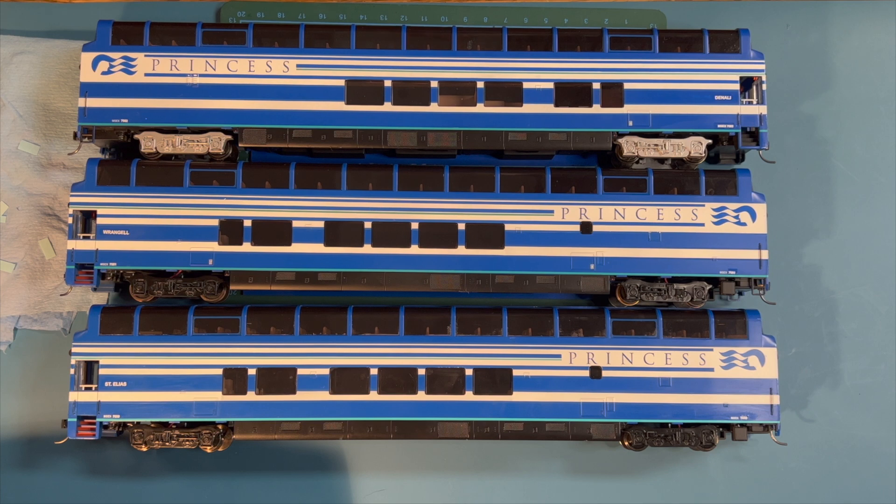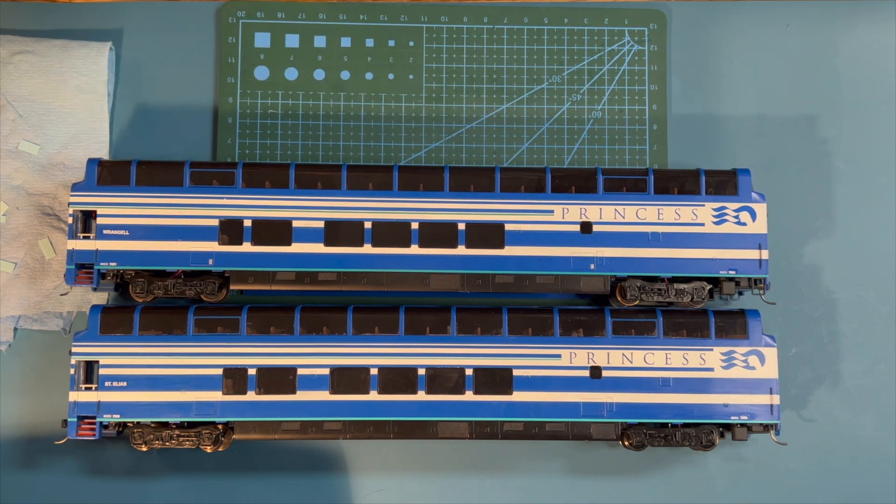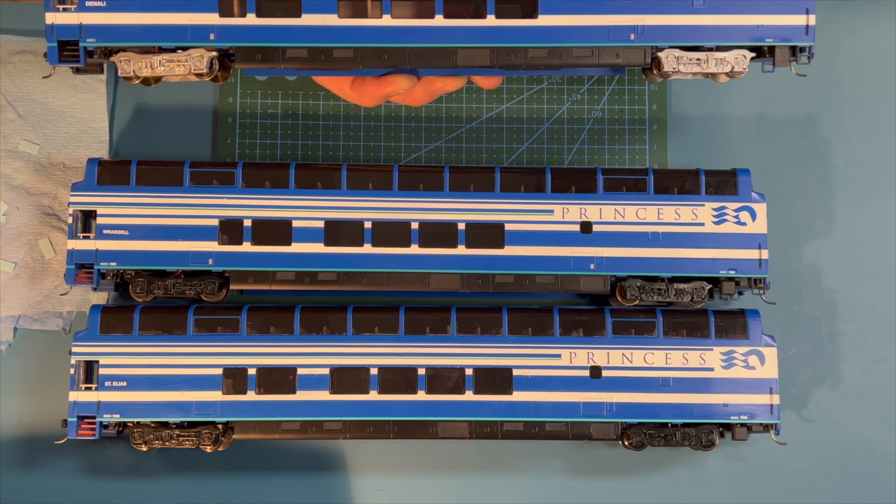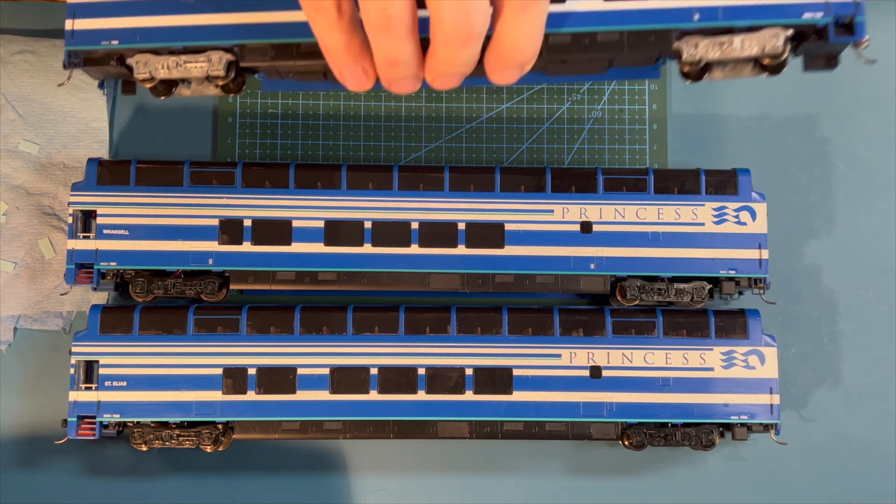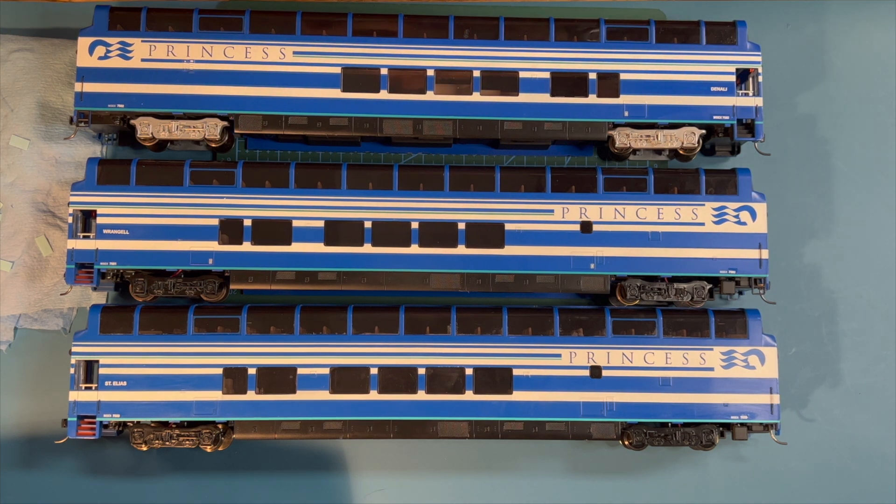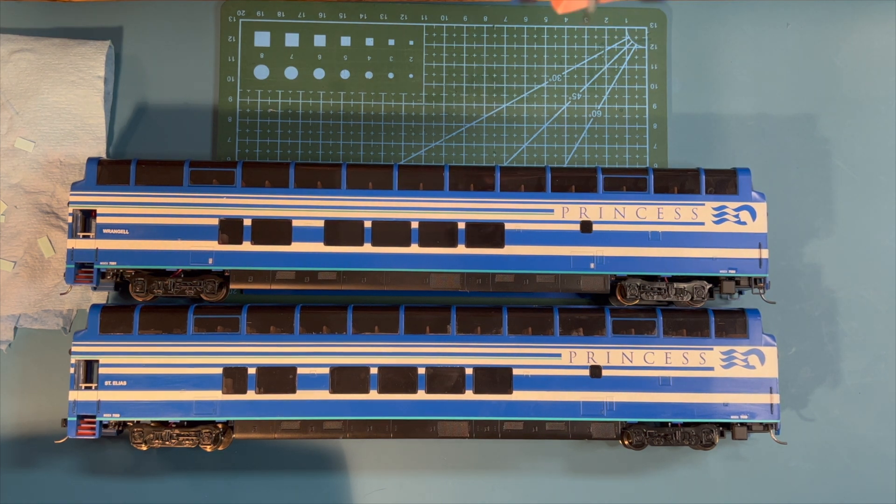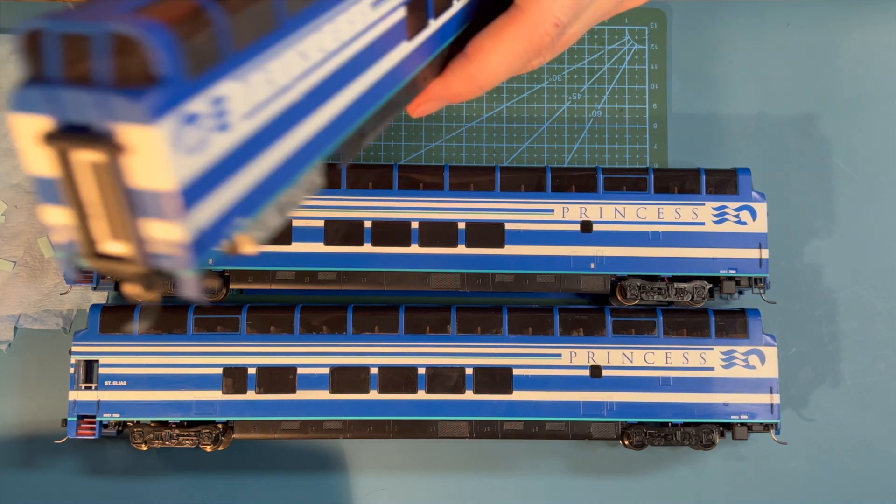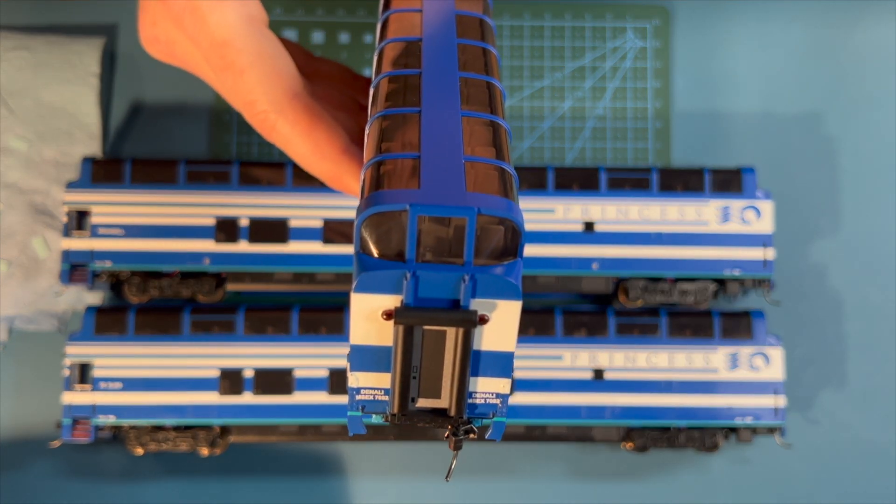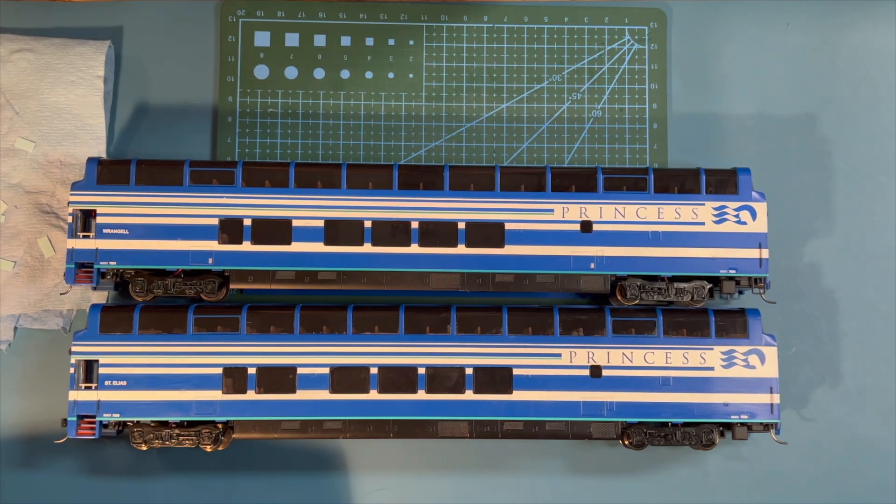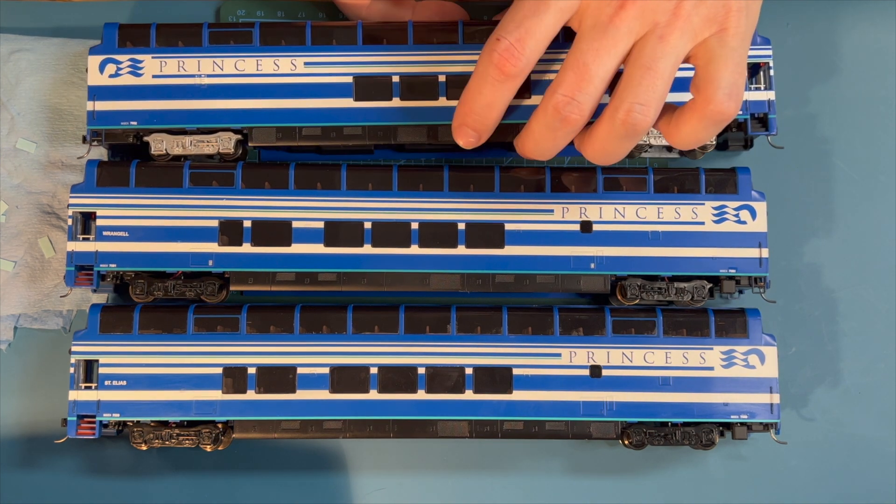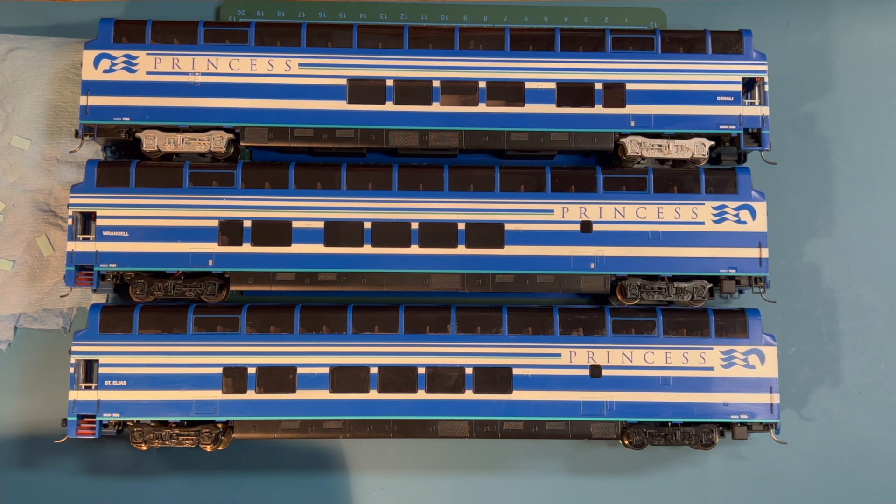Now that all of the decals are on minus the numbers for the second side, I'm going to go ahead and let these dry overnight. And tomorrow I will be back with hitting them with micro sol to completely set them in place. The ends especially need it because some of these overlap the rivet detail on either side of the door. So I really want to make sure those are set in place and dry before I hit them with micro sol. So I'll be back in a few minutes. But to me, it'll be tomorrow.